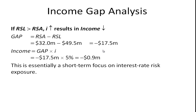Another way to write this is to look at the income gap, which is rate-sensitive assets minus rate-sensitive liabilities. In this case, $32 million minus $49.5 million gives a gap of minus $17.5 million. The change in income equals the gap times the change in interest rates: minus $17.5 million times 5% equals minus $0.9 million, or a $900,000 loss.